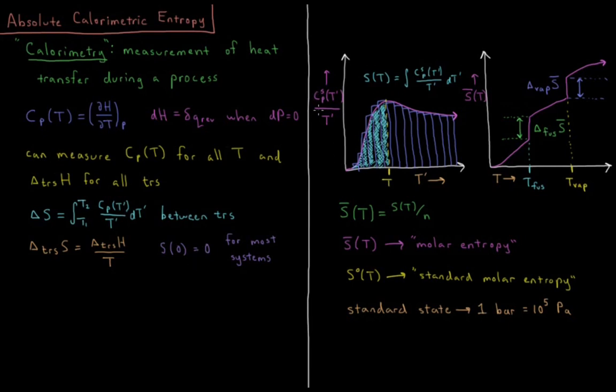We can get the constant pressure heat capacity of the solid phase as a function of temperature in the following way. It starts out very low near zero Kelvin, and then we can measure it and plot the heat capacity divided by temperature as a function of temperature. The entropy is just the integral of this function. We could interpolate this into some functional form and do that integral.